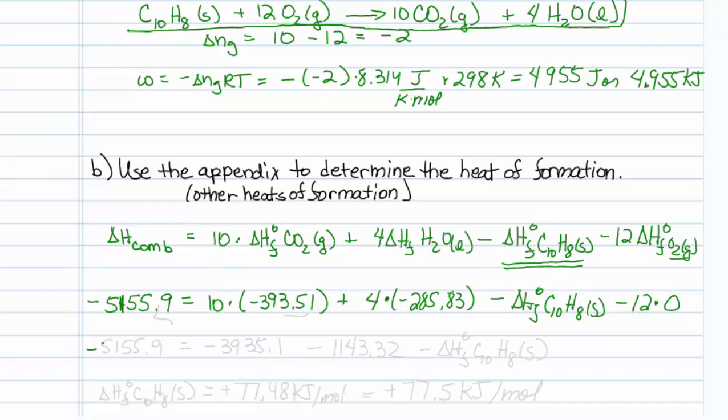I'll do this in stages. Minus 5155.9 is equal to minus 3935.1 when I multiply this out, minus 1143.32 when I multiply this out, minus what I'm trying to solve for. I will bring my heat of formation over to the left side, so its sign is positive, and I'll bring this over to the other side and do the math, and I get a plus 77.48 kilojoules per mole as my heat of formation of this material. It's probably only good to about the tenths place, so we'll go with a plus 77.5 kilojoules per mole, and that's how you do that.